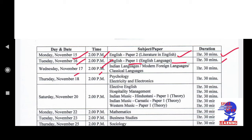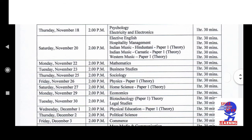Next exam on 17th November at 2 p.m. Subjects are Indian Languages, Modern Foreign Language, or Classical Language. Duration is 1 and a half hours — all durations are 1 and a half hours. Our next exam is on 18th November at 2 p.m. The subjects are Psychology and Electricity and Electronics. Both subjects are on 18th November. Duration is 1 and a half hours. On Saturday, 20th November, at 2 p.m., subjects are Elective English, Hospitality Management, Indian Music — Hindustani Music Paper 1 Theory, Indian Music Carnatic Paper 1 Theory, Western Music Paper 1 Theory. All durations are 1 and a half hours.